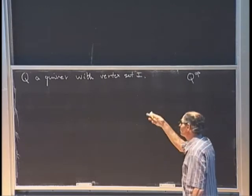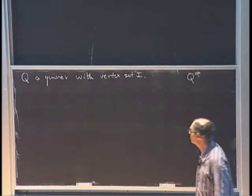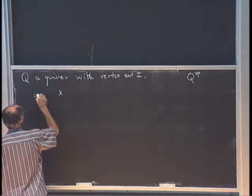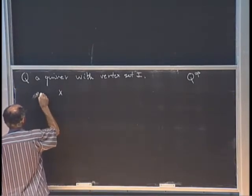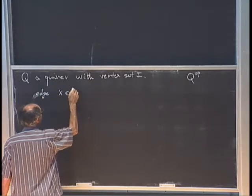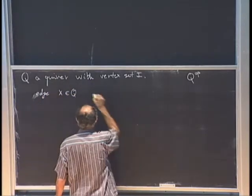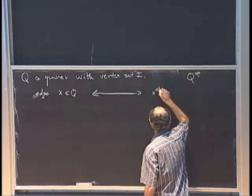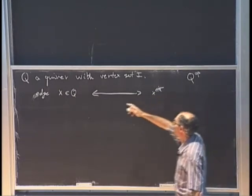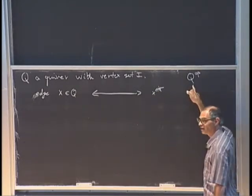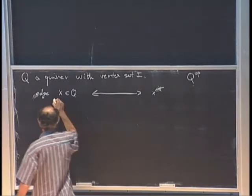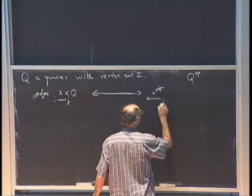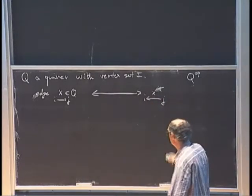Whenever there is an edge x in Q, the opposite quiver has a reverse edge denoted x-star. If this edge goes from I to J, then x-star goes from J to I. The vertices are the same.